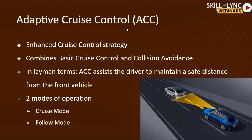Adaptive cruise control is a combination of two technologies: basic cruise control and collision avoidance. It is a step up from regular cruise control. Vehicles in European and American markets are mostly fitted with adaptive cruise control. In layman terms, ACC assists the driver to maintain a safe distance from the front vehicle, combining cruise control with collision avoidance to decide whether to brake in case of an incoming obstacle.